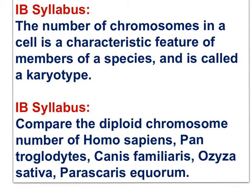The number of chromosomes in a cell is a characteristic feature of members of a species, called a karyotype. Comparing diploid chromosome numbers: Homo sapiens (humans), Pan troglodytes (the chimp), Canis familiaris (the domestic dog), Oryza sativa (rice), and Parascaris equorum (a roundworm).